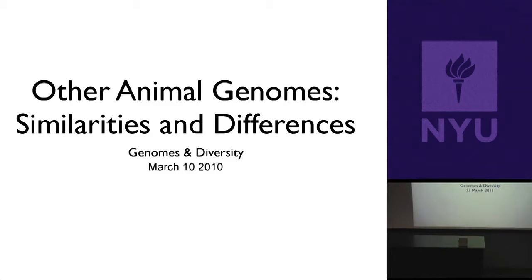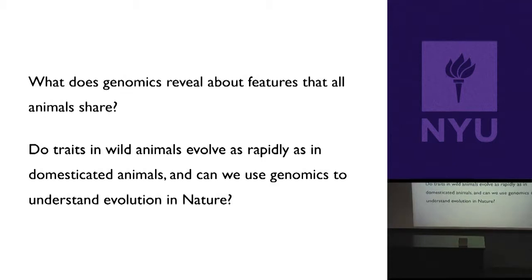The questions we're going to address today are: what does genomics reveal about the features that all animals share? If we study enough animals, maybe we'll find the commonalities that make animals alike. And following on dogs—where there are clearly differences between animals that arise very quickly, even within the same species—we want to ask whether dogs are unusual because they're a domesticated species humans have shaped, or if we can observe wild animals evolving as rapidly. And if so, can we use genomics to understand that evolutionary process?